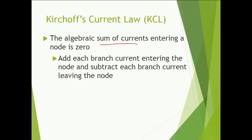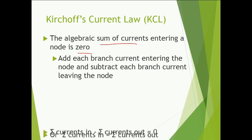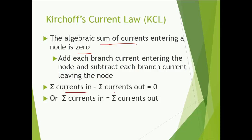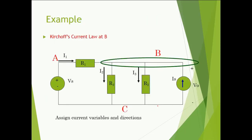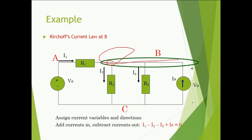Next is Kirchhoff's Current Law. The algebraic sum of currents entering a node is zero, or equivalently, current entering a node equals current leaving the node. That is: current in minus current out equals zero, or summation of current in equals summation of current out. For example, at node B, I1 and IS are going towards the junction, while I2 and I3 are leaving. So: I1 + IS = I2 + I3.